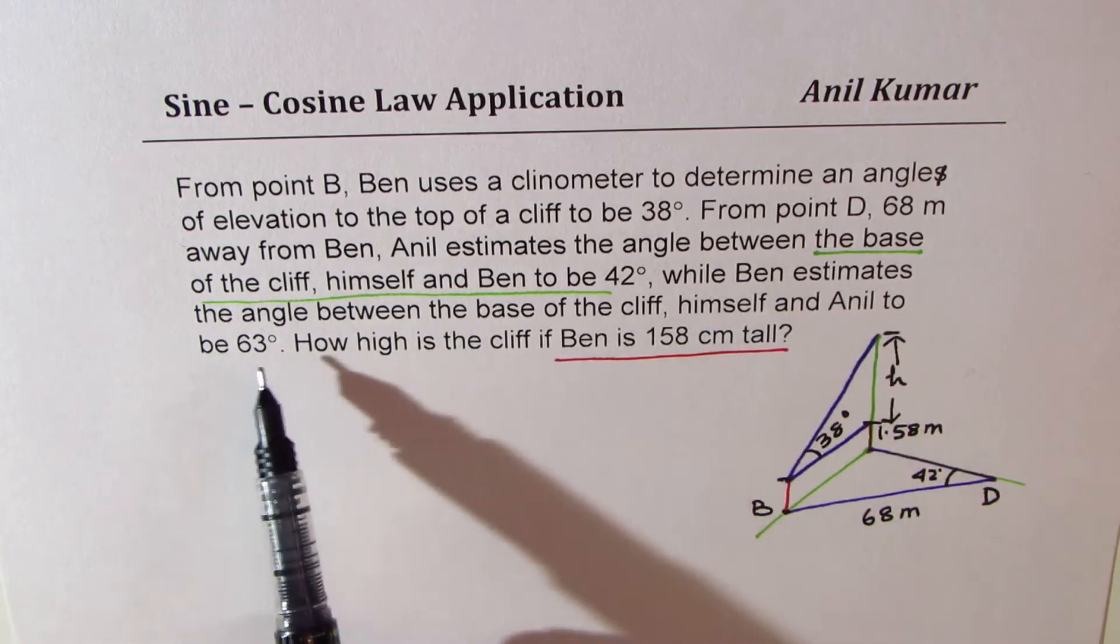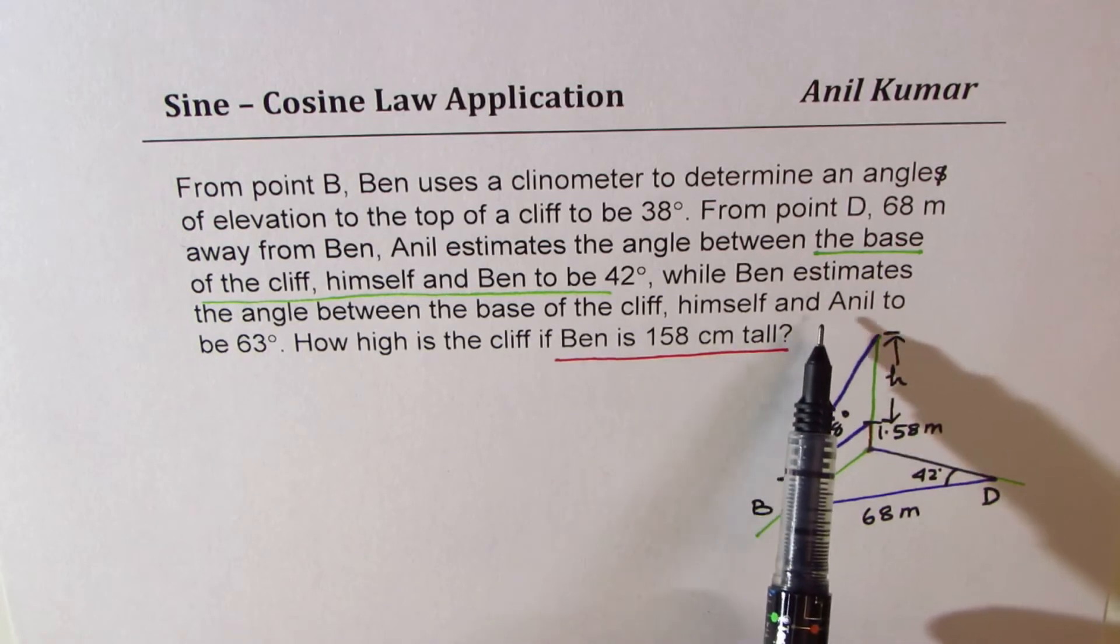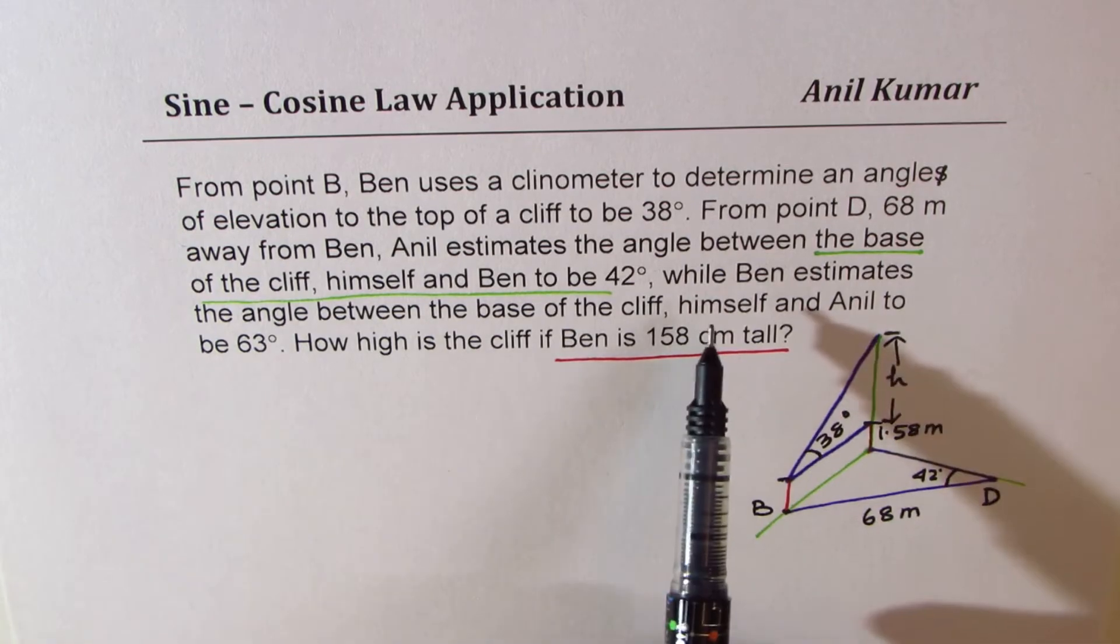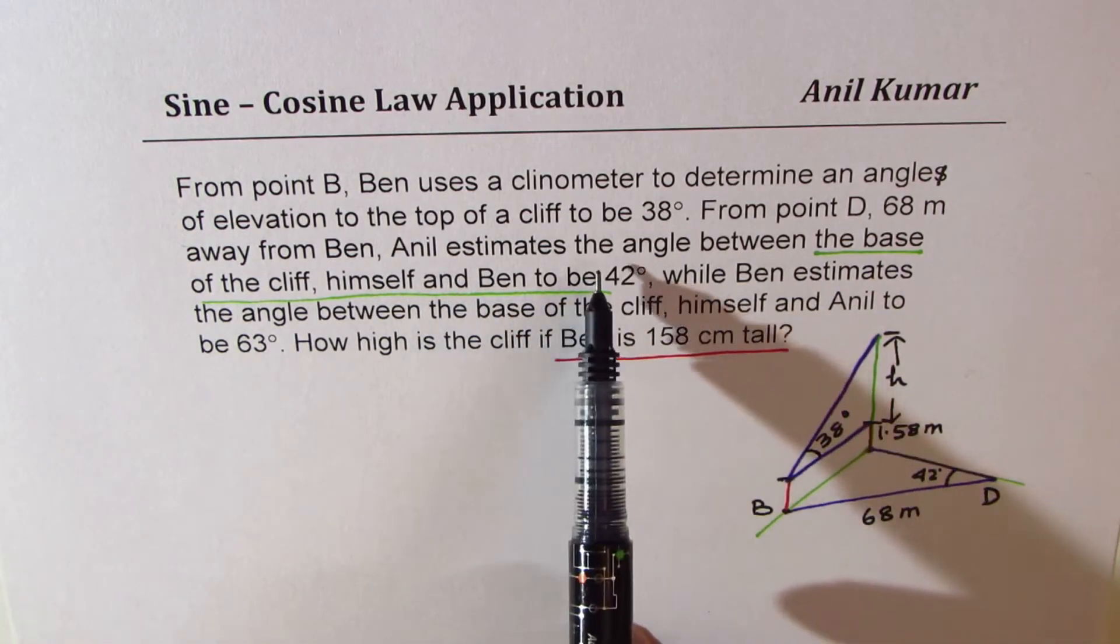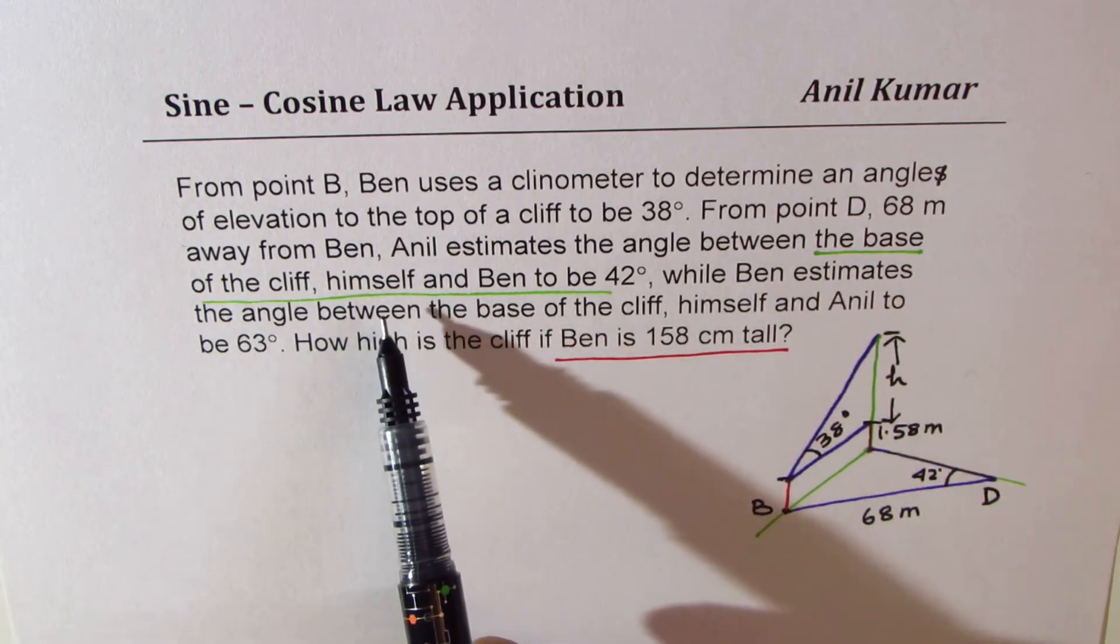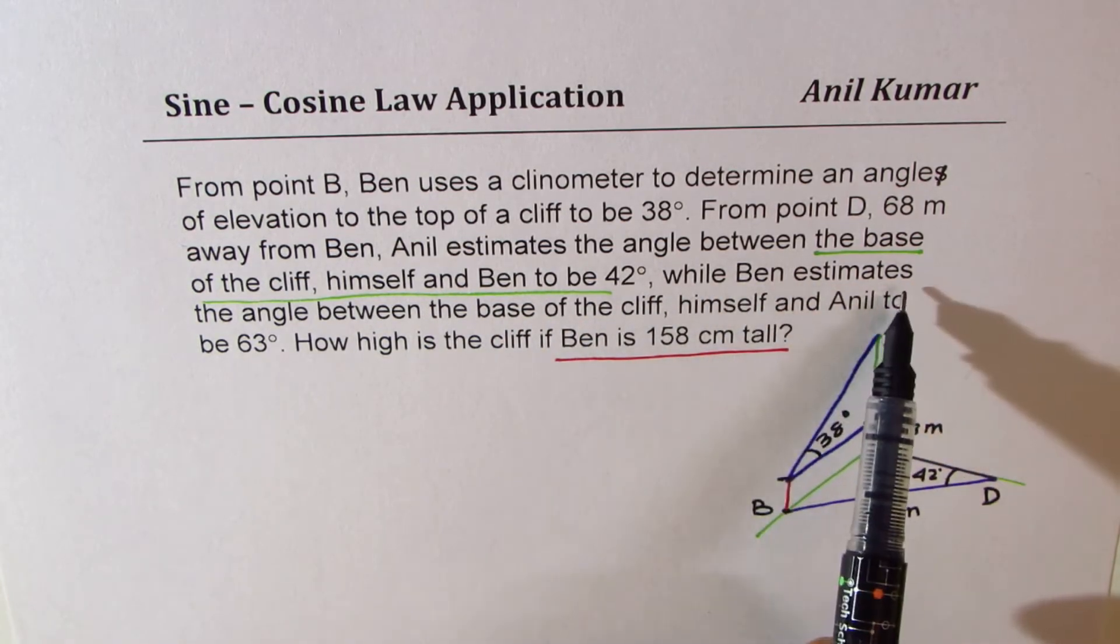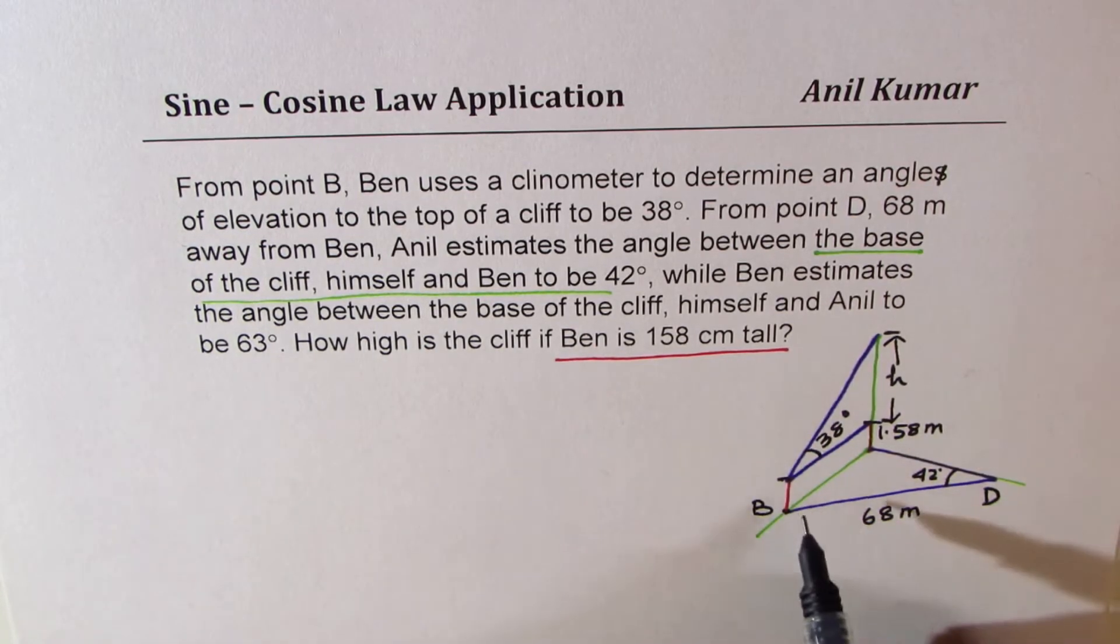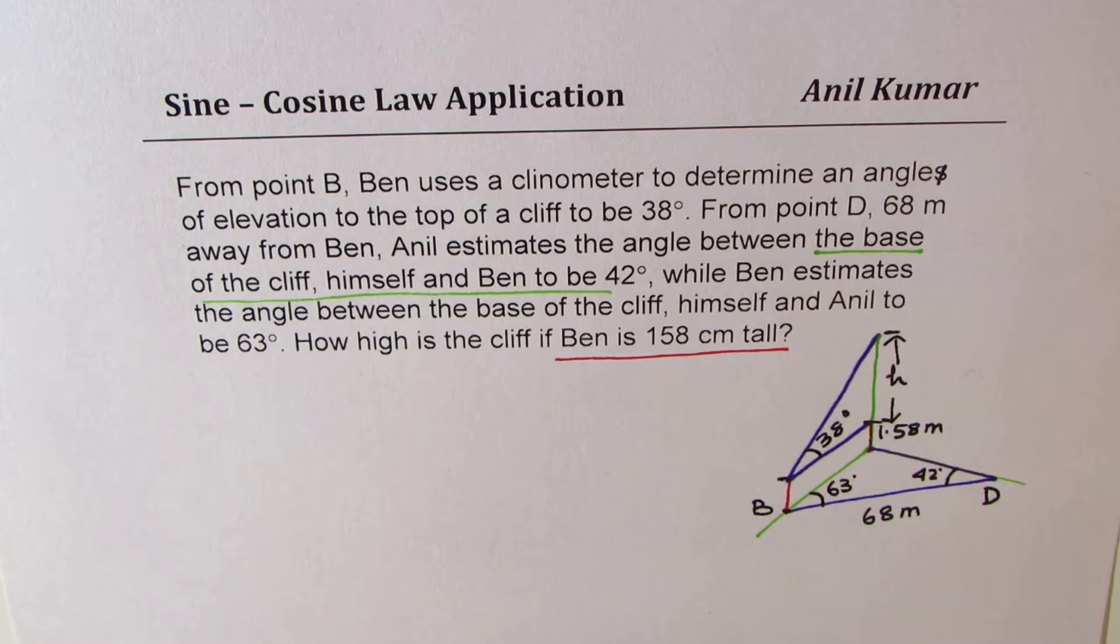While Ben estimates the angle between base of the cliff, himself, and Anil, to 63 degrees. Here it is written, Anil estimates the angle between the base of the cliff, himself, and Ben to be 42 degrees. While Ben estimates the angle between the base of the cliff, himself, and Anil to be 63 degrees. So this angle is 63 degrees. So that actually completes the diagram.